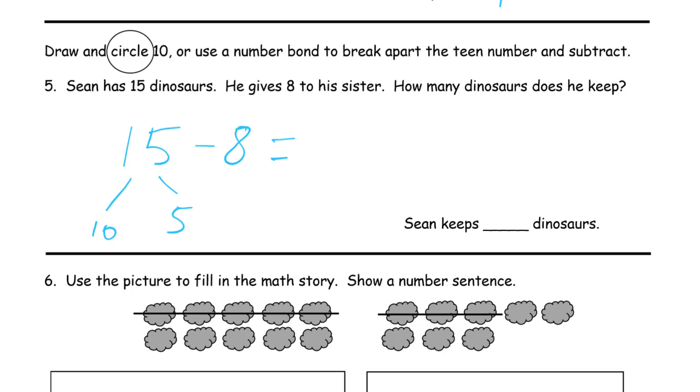So when I take 8 from this 10, I'm going to have 2 left. And I add the leftovers back together. 2 plus the 5, it's 5, 6, 7. Sean keeps 7 dinosaurs.